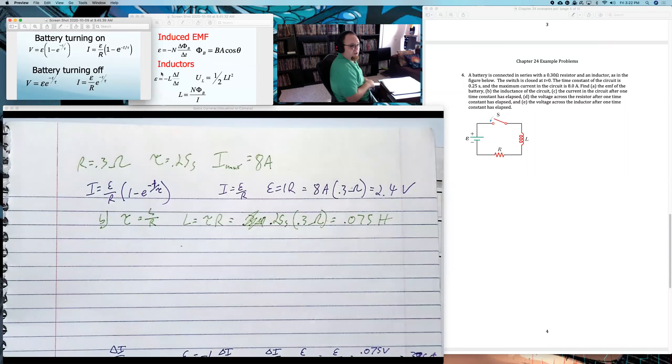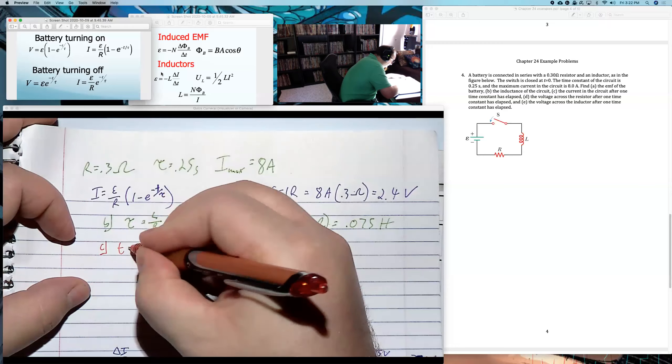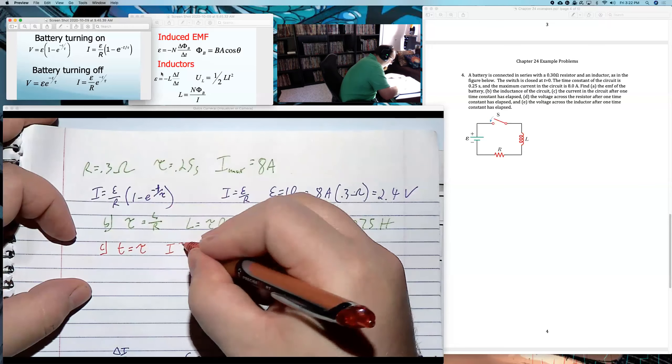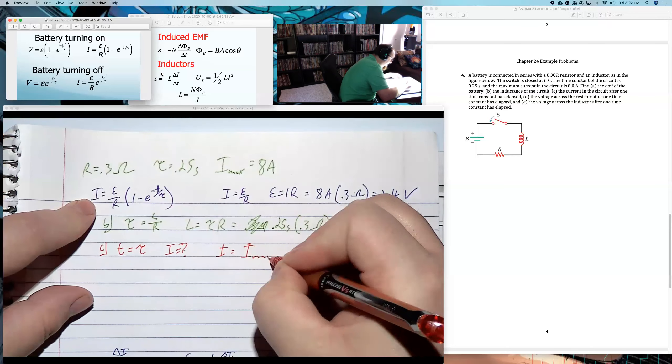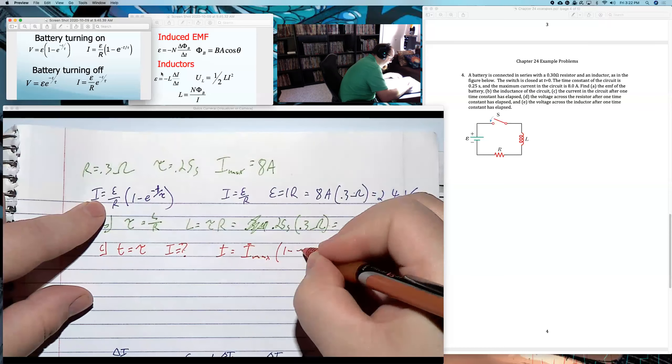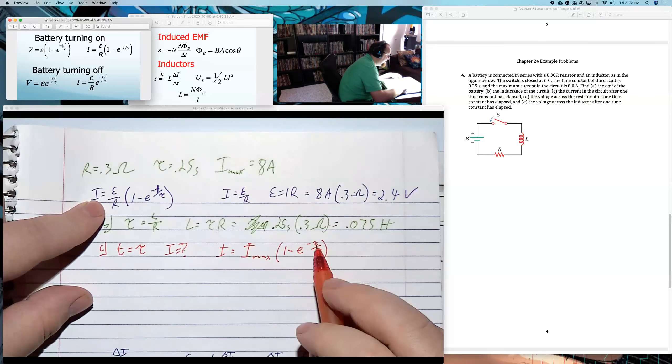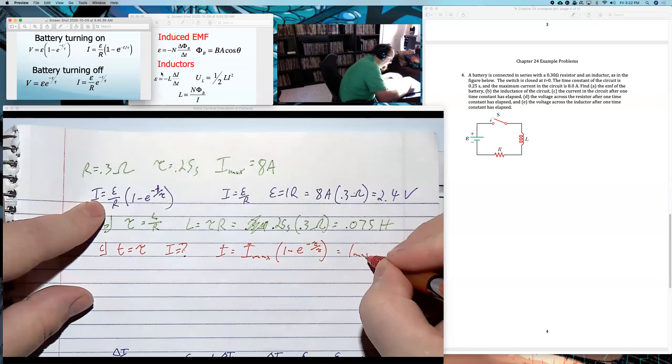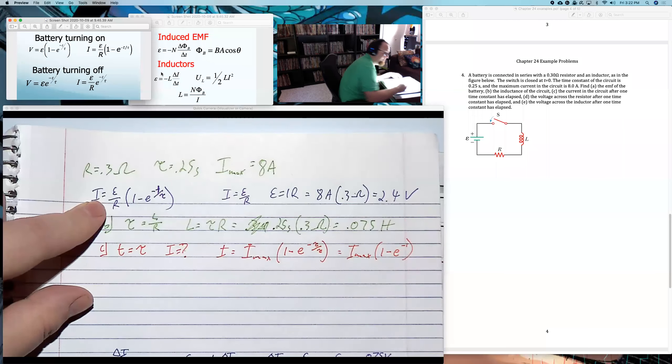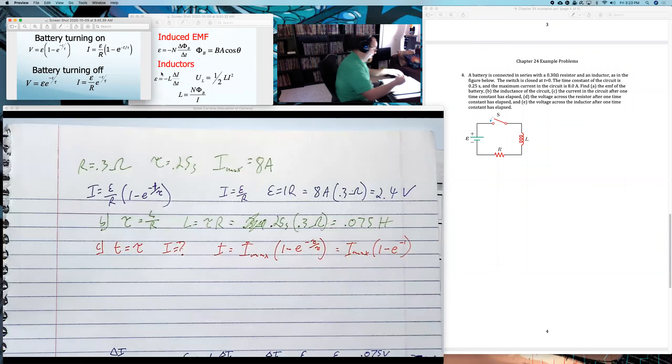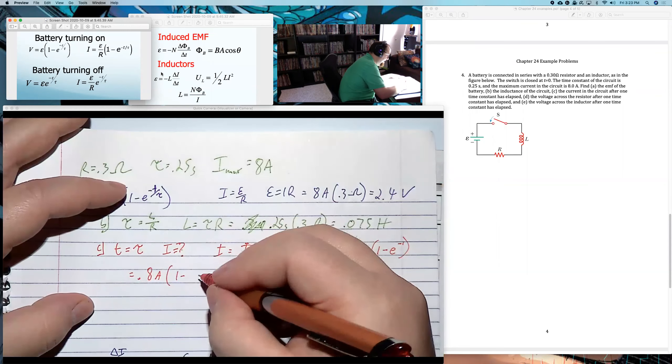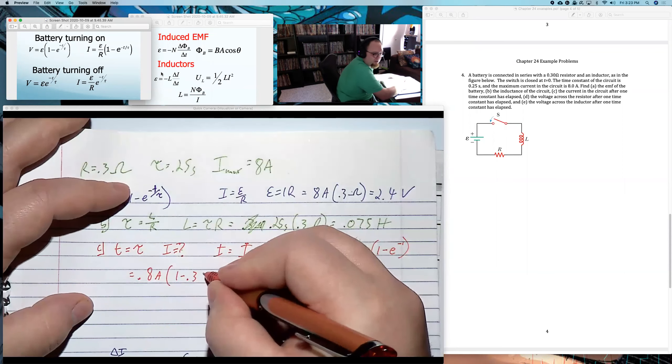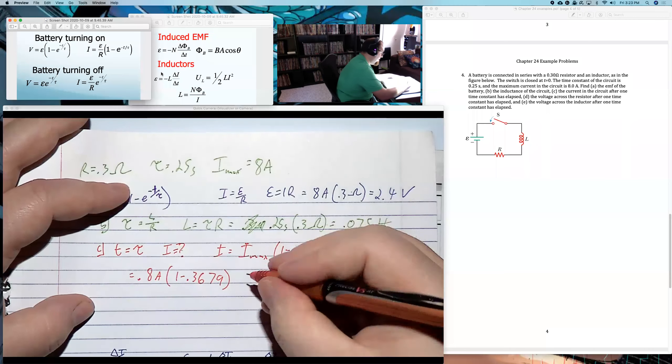Okay. Part C, the current in the circuit after one time constant has elapsed. What we're basically doing is we're saying when T equals tau, what's I? So I'll go to this equation and say I equals EMF over R or just I max. I'm not going to bother EMF over R because I already know what I max is. 1 minus E to the negative tau over tau. Well, I'm just plugging in tau for T. That means it's I max, 1 minus E to the negative 1. So 0.8 amps, 1 minus E to the negative 1. E to the negative 1 is like 0.36 something, 0.3679. And we can do that math.